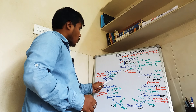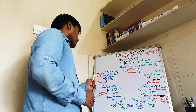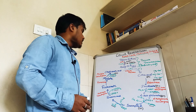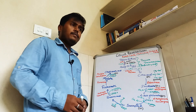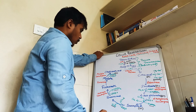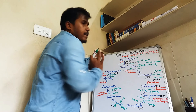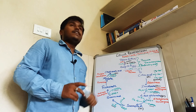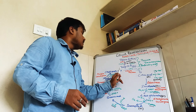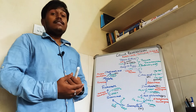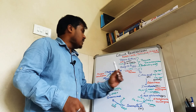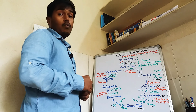Fumarate converts into malate in the presence of the enzyme fumarase. Then, in the last step of the Krebs cycle, malate converts into oxaloacetic acid in the presence of malate dehydrogenase, and NAD+ is reduced to NADH2. There is no true end product of the Krebs cycle, unlike glycolysis where the end product is pyruvic acid. The oxaloacetic acid regenerated is used again to combine with acetyl CoA to form citric acid. The only output is carbon dioxide.